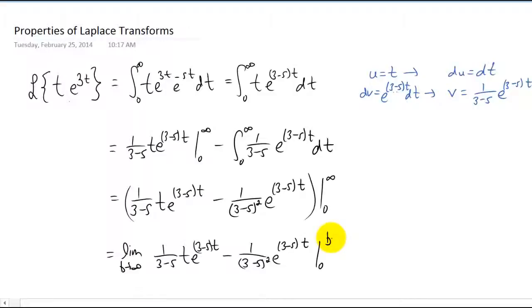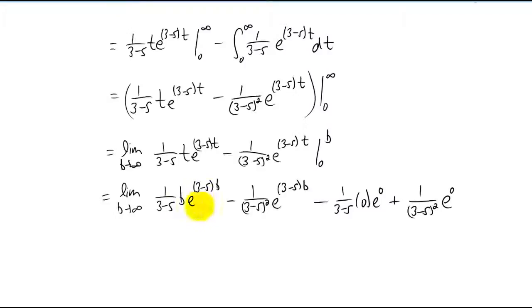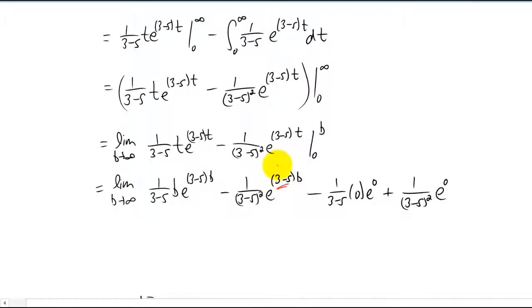We can now plug in our limits of integration — plugging those in for t, since our integral was with respect to t. Now we need to take these limits. Since this is an exponential here and this is an exponential here, this limit is either going to go to infinity or it's going to go to zero, depending on whether that exponent is positive or negative. We're not interested in a Laplace transform that doesn't exist, so we're going to say that three minus s has to be negative.